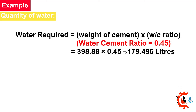Quantity of Water: Water required = Weight of cement × water-cement ratio. Water-cement ratio = 0.45. Water required = 398.88 × 0.45 = 179.496 liters.